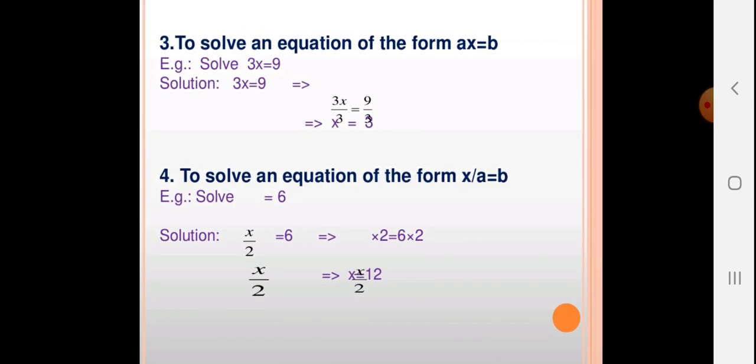To solve a multiplication-form equation: 3x = 9 — since 3 is multiplied with x, it transposes to division. So x = 9 ÷ 3 = 3. To solve a division-form equation: x ÷ 2 = 6 — take 2 to the right-hand side; since 2 is in division it goes to multiplication, so x = 6 × 2 = 12.